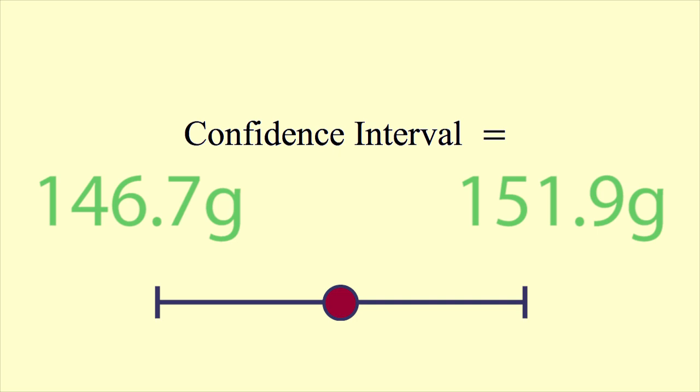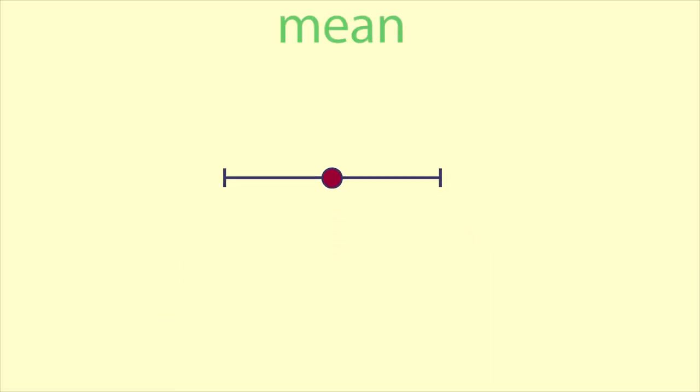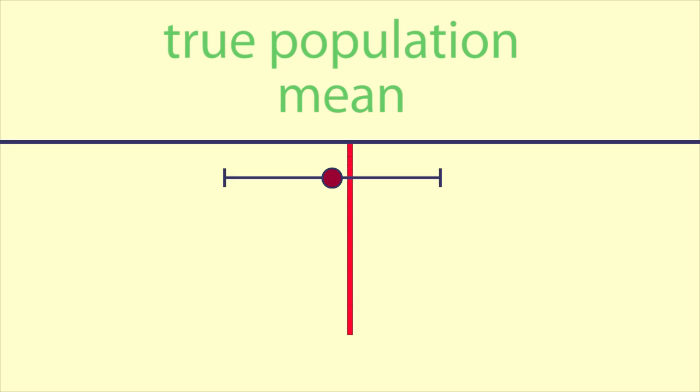This is not the interval that will hold the weights of 95% of the apples in the orchard. It is the interval that we are 95% confident will contain the true, unknown value of the population mean.